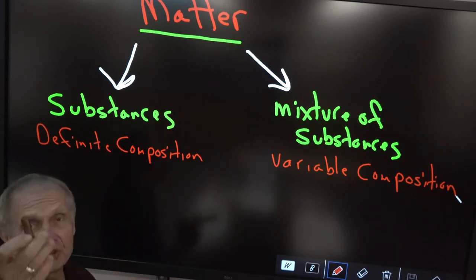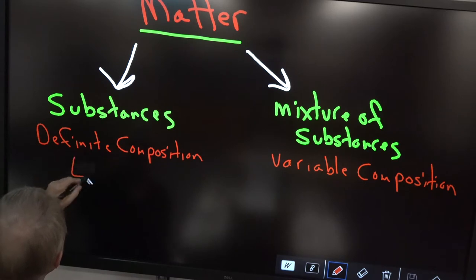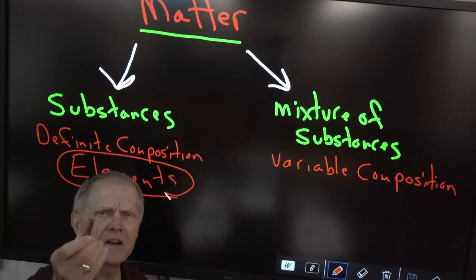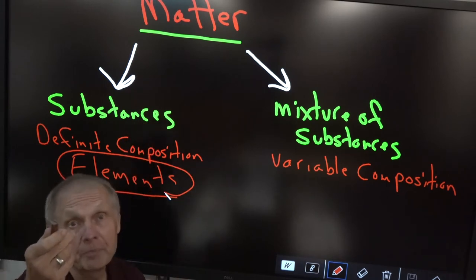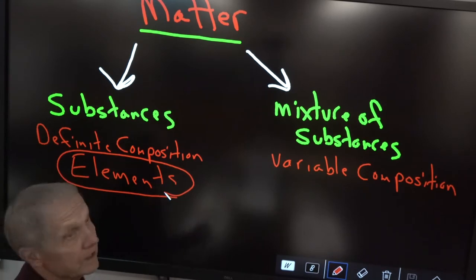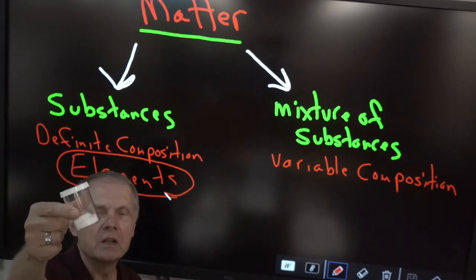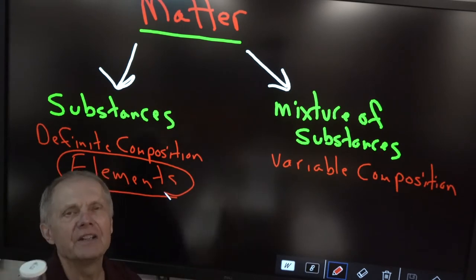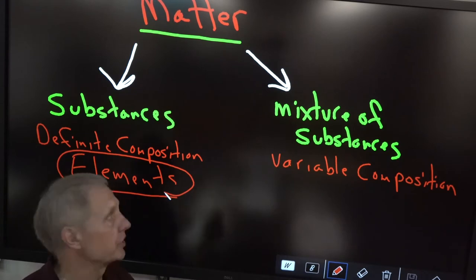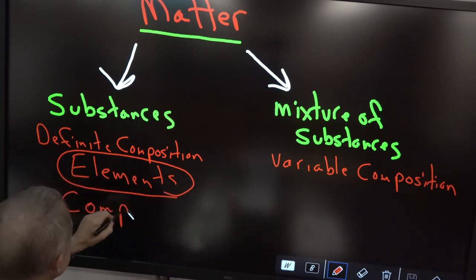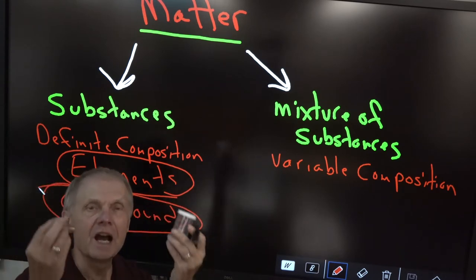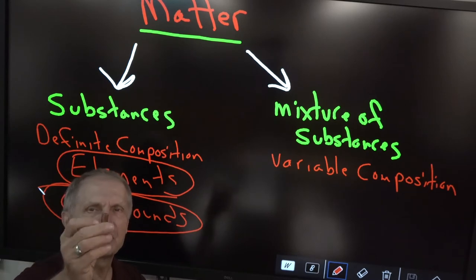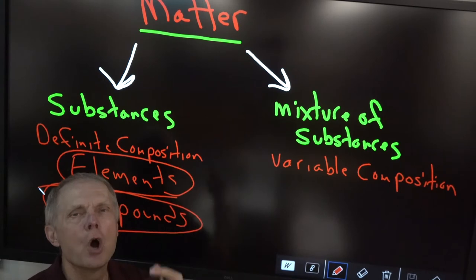What falls under definite composition for substances? Elements would be under definite composition — they are considered a pure substance. Another thing with definite composition would be salt, NaCl. Salt is a compound. If you take a sample of the top, middle, and bottom of a salt shaker, you're going to find NaCl. So elements and compounds have definite composition. If you take a sample of top, middle, and bottom and they're all the same, it's considered homogeneous.